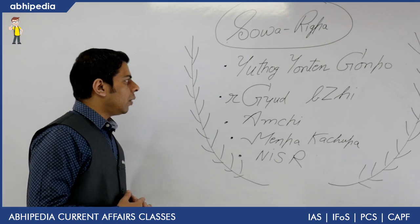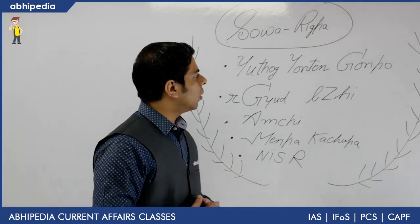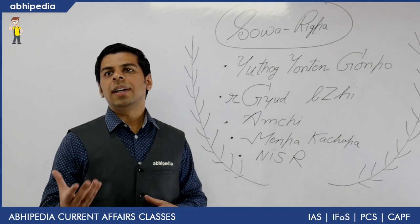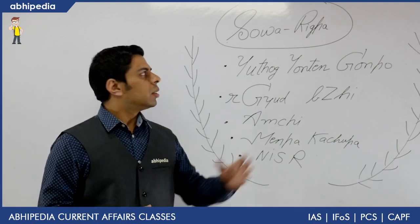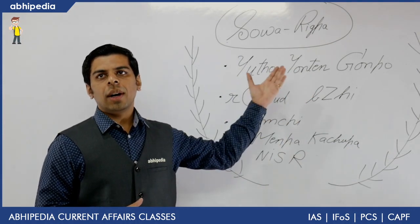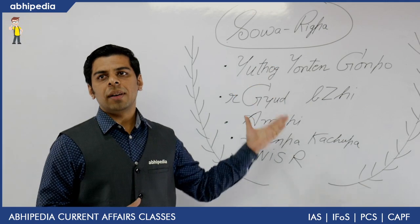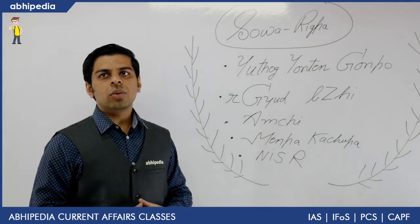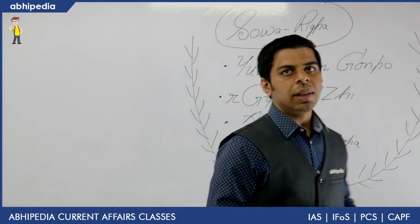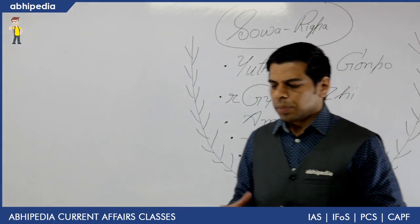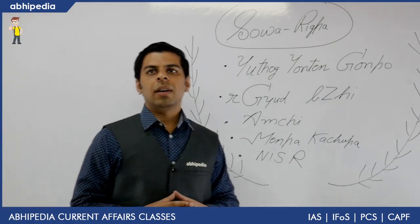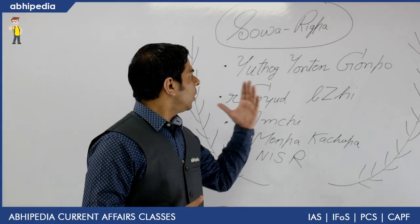Whenever you cover any Science and Tech or current affairs topic, you should focus on the genesis of the term — what its literal meaning is. Since Sova Rigpa is not a common word used in daily parlance, you have to decode what it means. The literal meaning of Sova Rigpa is 'Science of Physical and Mental Healing,' which clearly highlights that we are focusing on some medical system likely to benefit healthcare.